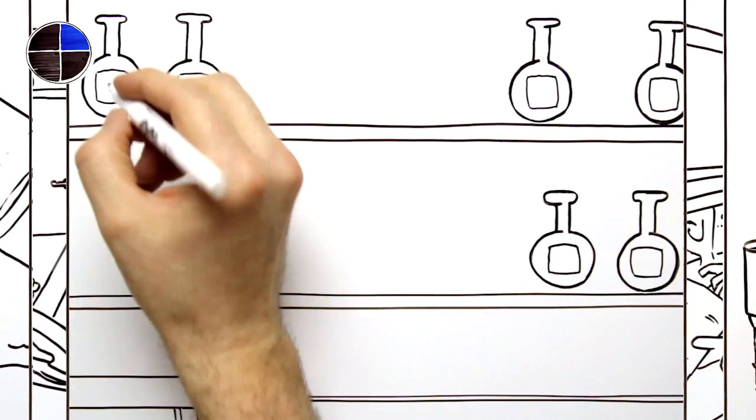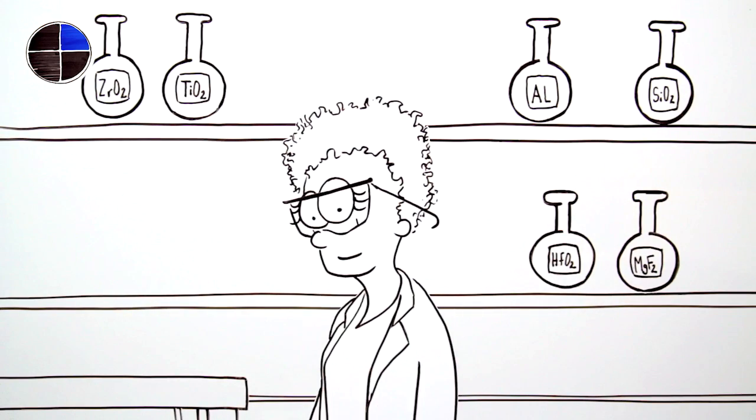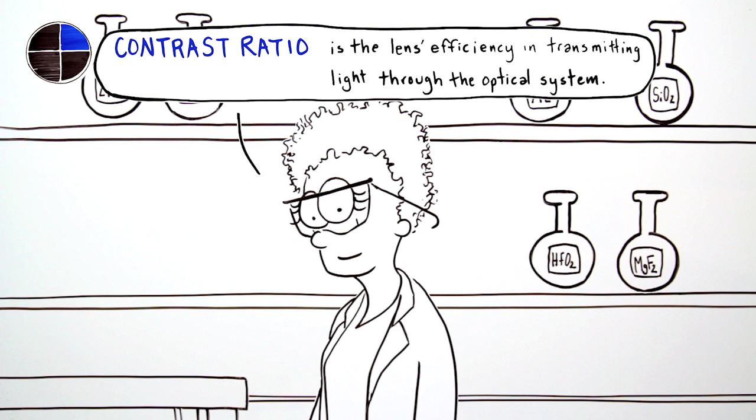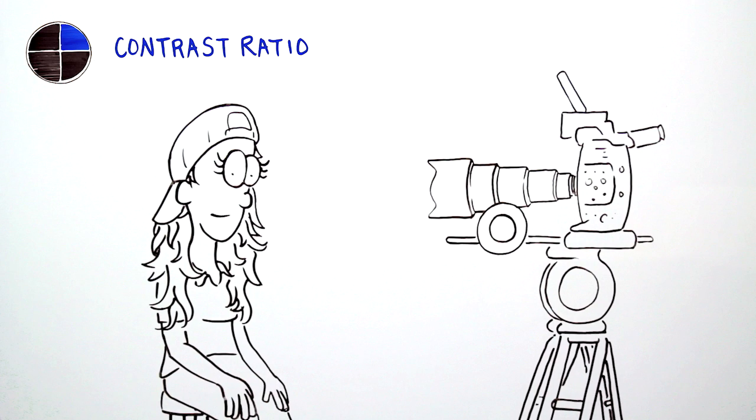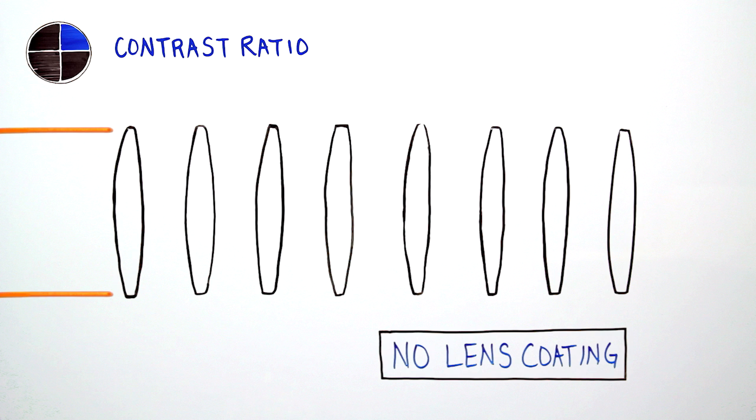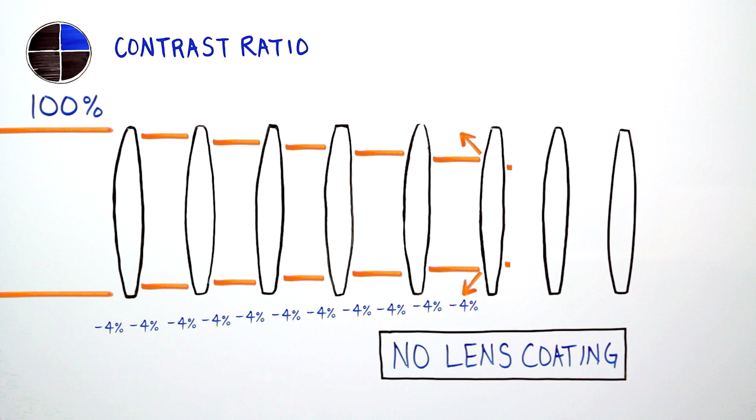The second critical benchmark for capturing a vivid image is a high contrast ratio, which is the lens's efficiency in transmitting light through the optical system while minimizing reflections that pollute the image. Capturing the ideal contrast can be difficult because when light enters or exits a lens surface, about 4% of the light is lost through reflections. The reflections also contaminate blacks in the image.